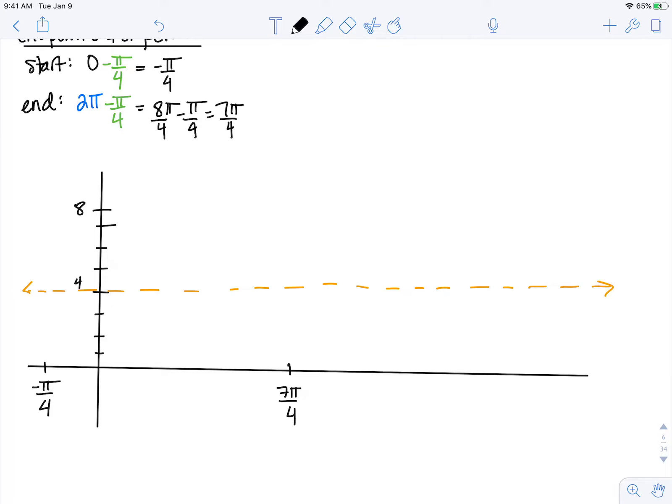Now in order to find the middle of those two endpoints, I'm going to do the average. Negative pi over 4 plus 7 pi over 4 is 6 pi over 4. If I divide that by 2, that's 6 pi over 8, which simplifies to be 3 pi over 4. So notice you can do that work in your head.